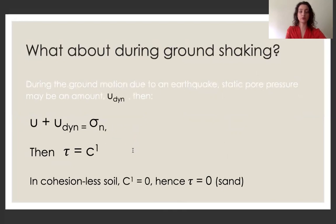So what about during ground shaking? Further to this, we would in this case want to consider a hydrostatic condition where there is no water flow, which results from the weight of any material measured above any given point, which is shown as Udyn here. And this is also known as a static pore pressure. And when we add this to the overall pore pressure, we get this here, which is sigma N.